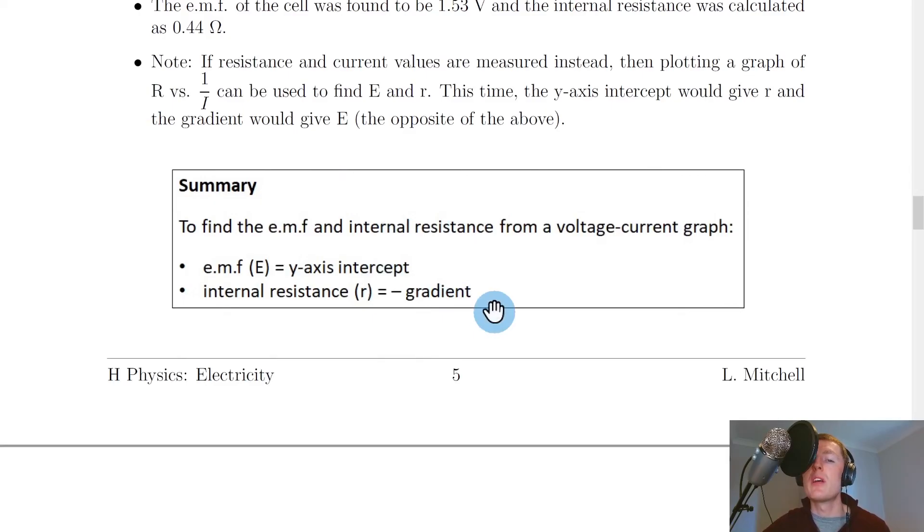And lastly here's a little summary of how to find the emf and internal resistance from a graph. So it says to find the emf and internal resistance from a voltage current graph the emf is equal to the y-axis intercept and the internal resistance r is equal to the negative of the gradient. So these two things are really important because you could be asked to do both of them.